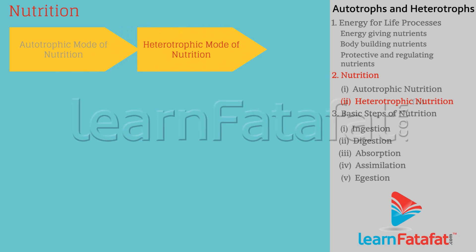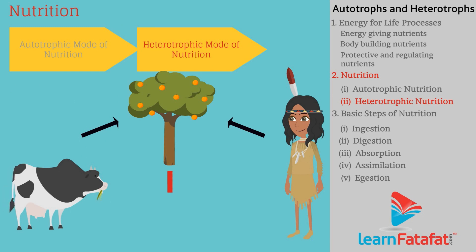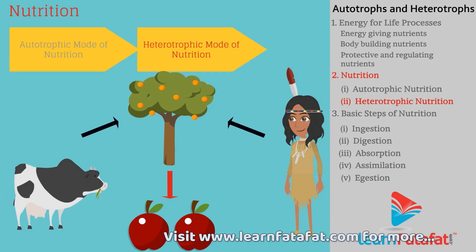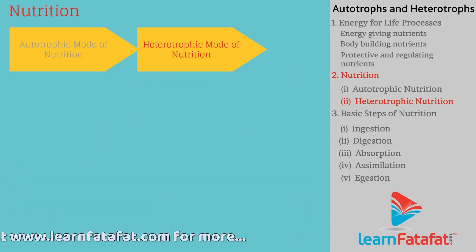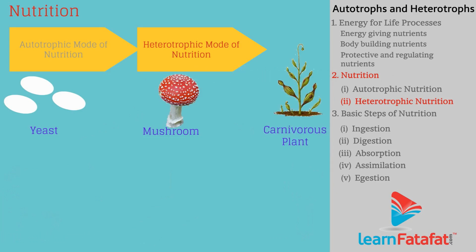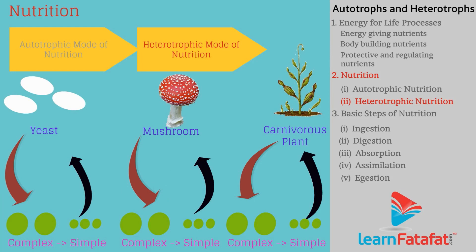In heterotrophic mode of nutrition, the organism is dependent on other organisms for obtaining food. Different organisms have different ways to obtain food. For example, fungi like yeast, mushrooms, and some carnivorous plants break down the complex food material into simple substances outside the body and then take these inside the body.